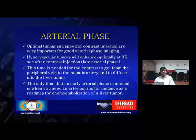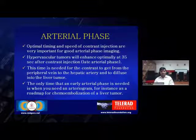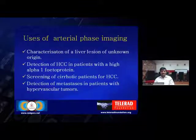In CT and MRI contrast studies, we basically study three phases: arterial phase, portal phase, and equilibrium phase, to understand the imaging features of particular lesions. For the arterial phase, optimal timing and speed of injection are very important. Hypervascular tumors enhance optimally around 35 seconds — this is the late arterial phase. The early arterial phase is only used when you need a proper arteriogram, for instance as a roadmap for chemoembolization. Other uses of arterial phase imaging include characterization of liver lesions of unknown origin, detection of hepatocellular carcinoma in patients with high alpha-fetoprotein, screening of cirrhotic patients for hepatocellular carcinoma, or detection of metastases from hypervascular tumors.